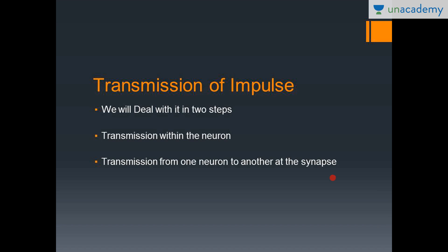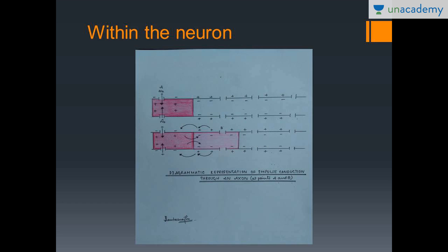For transmission within the neuron: when a stimulus is applied to one point of the neuron it gets depolarized, making the inside positive and outside negative. This positive charge has a tendency to spread forward, and it acts as a stimulus to the next part of the membrane, which then gets depolarized, and this depolarization continues to propagate along the neuron.